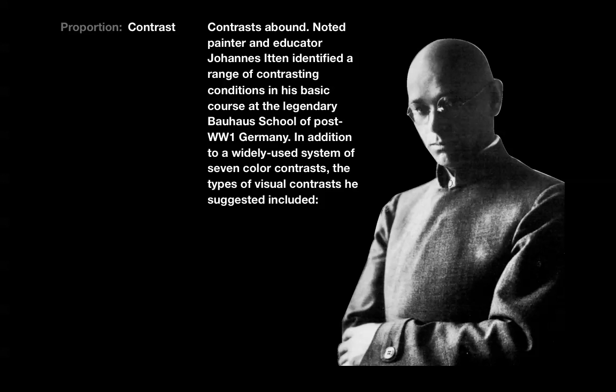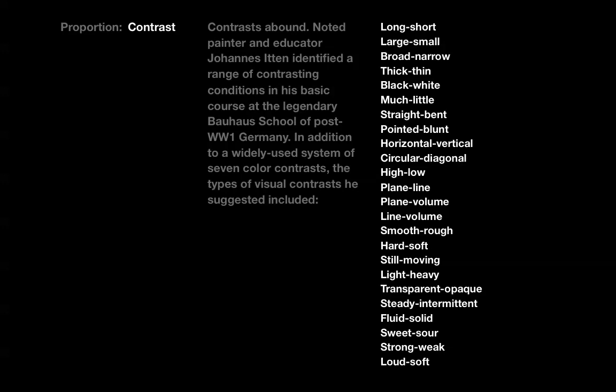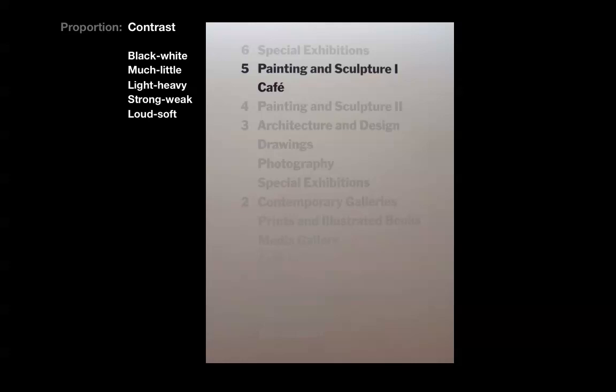In addition to a widely used system of seven color contrasts, the types of visual contrasts Itten suggested included the following list. This sign — a detail from a larger panel opposite the elevator doors on the fifth floor of the Museum of Modern Art — is a great example of information design and a very good use of contrast on several levels: black letters against a white background and light gray words, a small amount of black type against the larger amount of gray type, and contrasts of heavy versus light, strong versus weak, and soft versus loud.